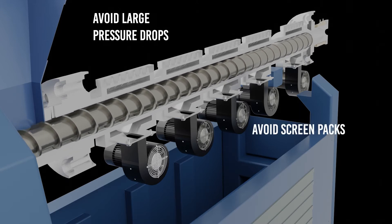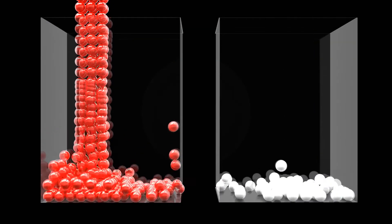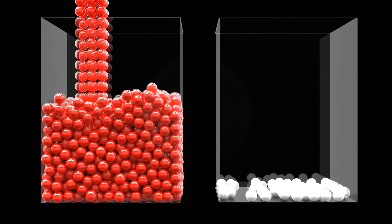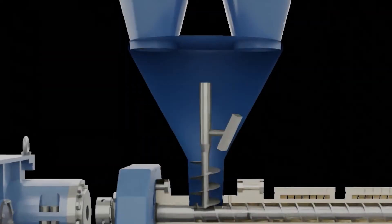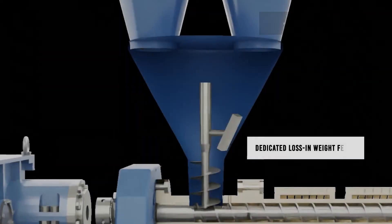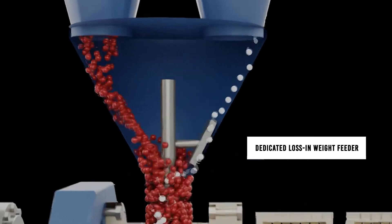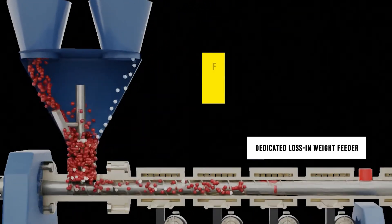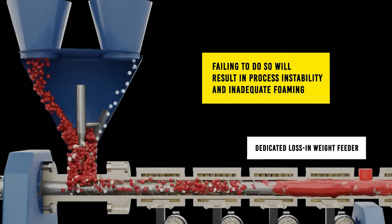Should a screen pack be required, we advise the use of a coarse mesh. Accurate dosing is key to a successful foaming process, as typical letdown ratios range between 0.5 and 2%. We recommend a dedicated loss-in weight feeder directly at the feed throat, but any method that ensures accuracy would be sufficient. Failing to control the feed will result in process instability and inadequate foaming.